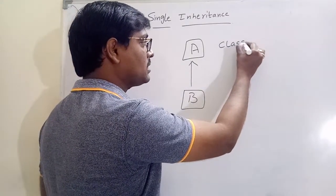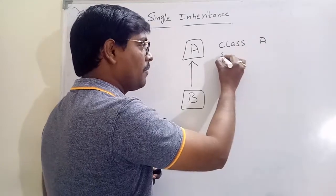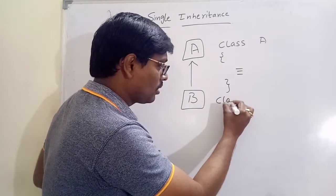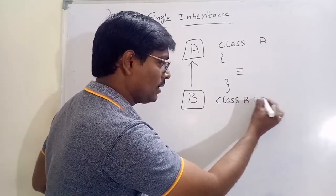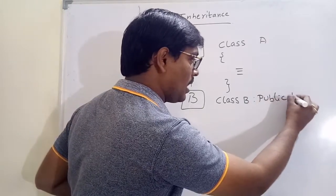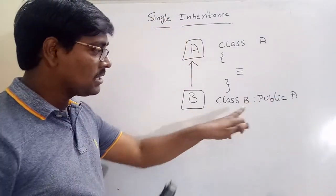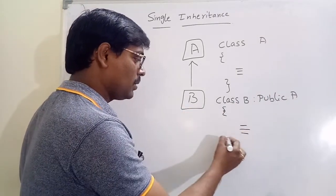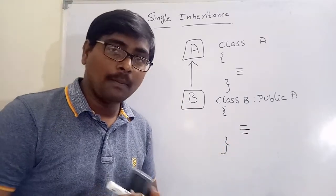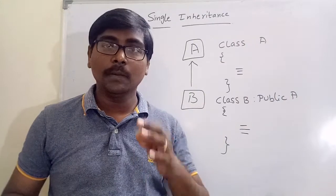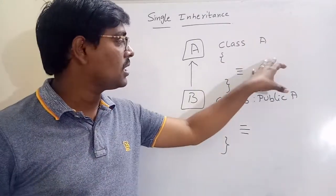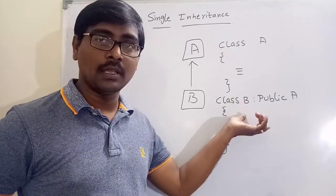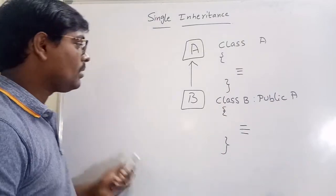The structure is: class A contains some data members and member functions, and we have class B colon public A — meaning class B is the derived class, it derives from class A, and contains some members. The public and protected members of class A are also available in class B. So we create an object for class B and can access all the members.